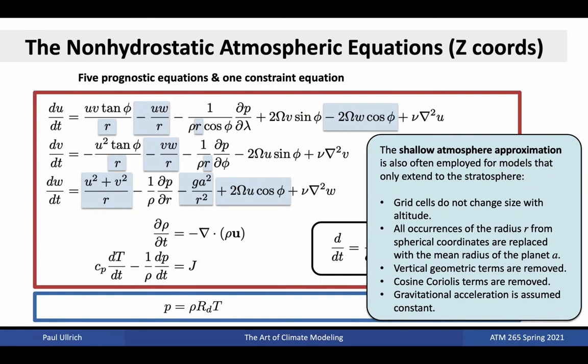The second approximation commonly employed is the shallow atmosphere approximation. Under this approximation, we assume that atmospheric grid cells do not change in size as altitude is varied. This has several consequences: first, all occurrences of the radius R are replaced by the mean radius of the planet, denoted A; second, it removes all vertical geometric terms, including the two terms involving vertical velocity in the horizontal velocity equation and the u² + v²/R term in the vertical velocity equation; third, it removes the cosine Coriolis terms; and fourth, gravitational acceleration is replaced by a constant.